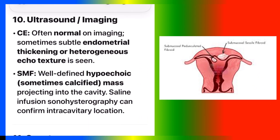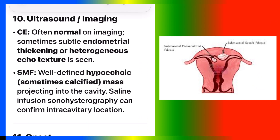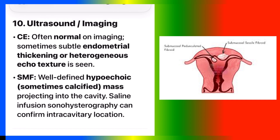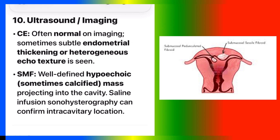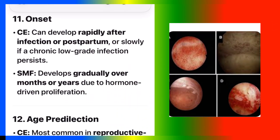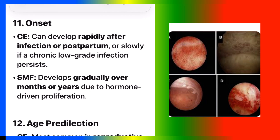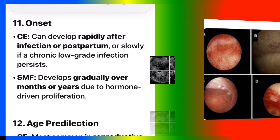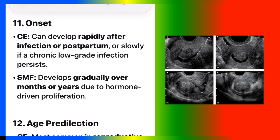Number ten: ultrasound imaging. CE is often normal on imaging; sometimes subtle endometrial thickening or heterogeneous echo texture is seen. SMF shows a well-defined hypoechoic, sometimes calcified mass projecting into the cavity. Saline infusion sonohysterography can confirm intracavitary location. Number eleven: onset. CE can develop rapidly after infection, postpartum, or slowly if a chronic low-grade infection persists. SMF develops gradually over months or years due to hormone-driven proliferation.